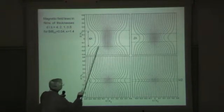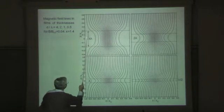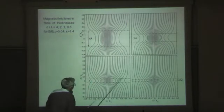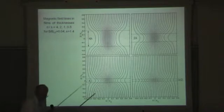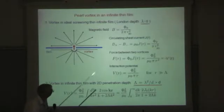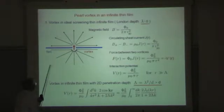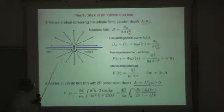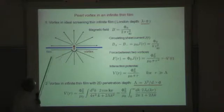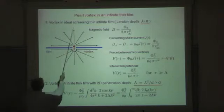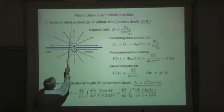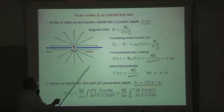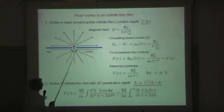This is the same solution but for different thicknesses: thick film, thinner, thinner, and even thinner. Here is an analytic calculation for the behavior of a single vortex in a thin film — a so-called Pearl vortex — because Judea Pearl in 1964 wrote his thesis and calculated the properties of such a vortex in a thin film. Thin means the thickness should be smaller than the penetration depth lambda.